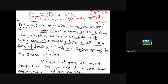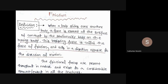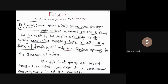Frictional forces are present throughout nature and exist to a considerable extent in all machines. If you clearly analyze all contacting surfaces — whether between two machines or between a fixed system and a variable element — there is always roughness present, and due to those contacting surfaces, friction will always exist in nature.